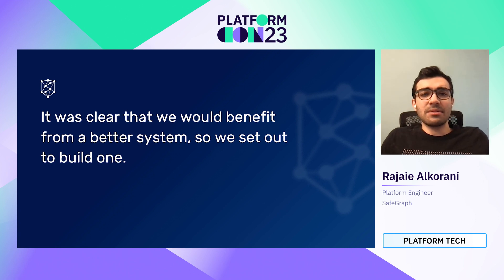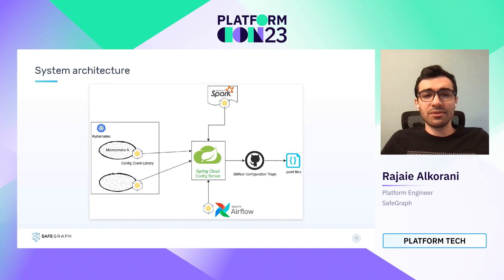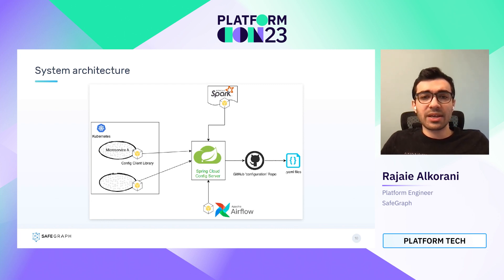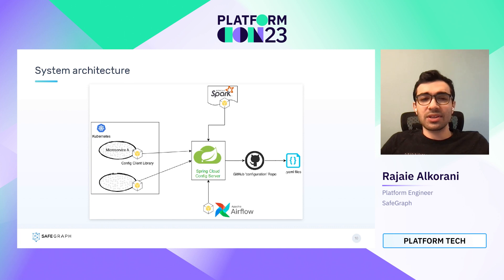Our old config management system made it clear that we would benefit from a new approach, and that's why we set out to build one. At the core of our new system is the Spring Cloud Config Server, an open source configuration service that allows clients to fetch configurations through an HTTP API. Clients can provide parameters like application name, config version, and a profile when fetching configurations. The config server uses Git as one of its storage backends, which allowed us to store our configurations on GitHub and benefit from features like pull requests. We also created config client libraries in Python and Scala to help engineers use the configuration service without directly calling the HTTP API.